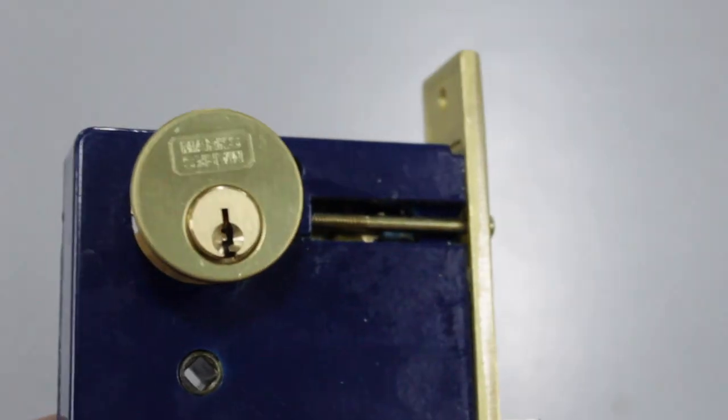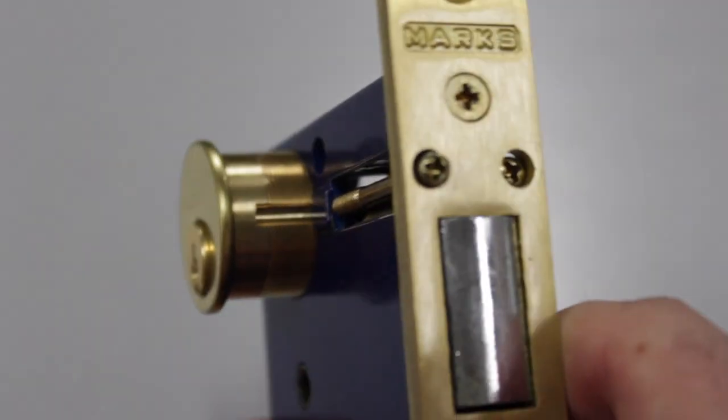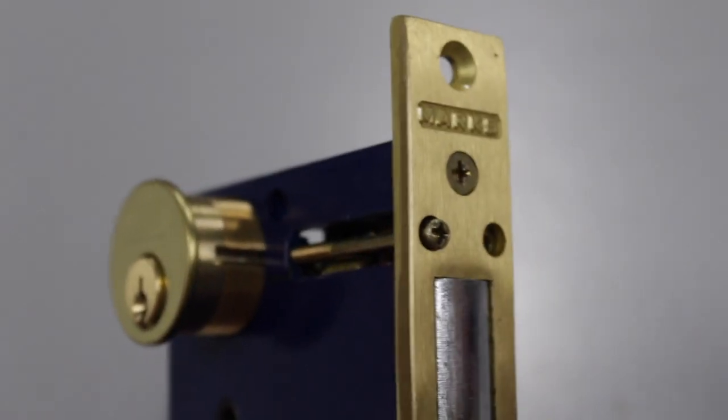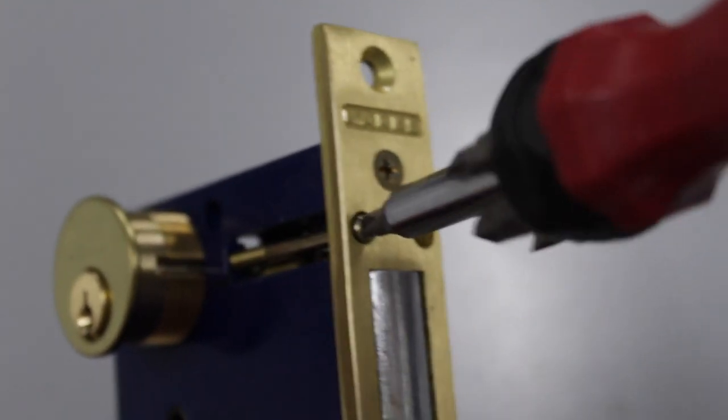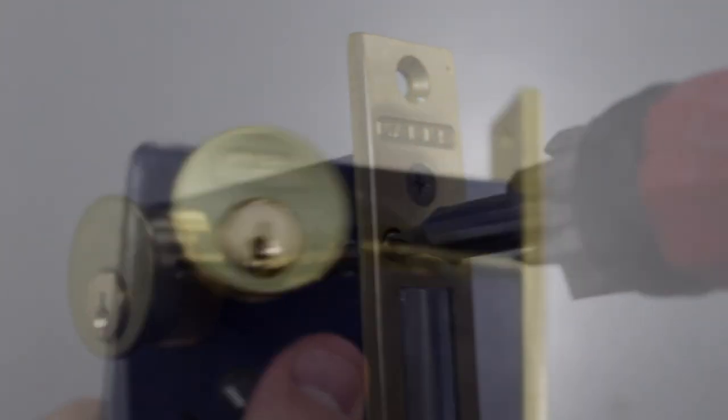You can also see on the key cylinder the grooves that run on either side. When you tighten the loosened screw, it extends the pin which keeps the cylinder in place.